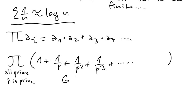So this is nothing else than geometric series for q equal 1 over p. And we take a look at this product here. And I claim that this product is nothing else than sum 1 over n.